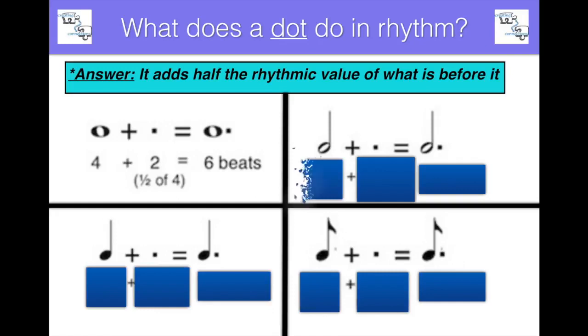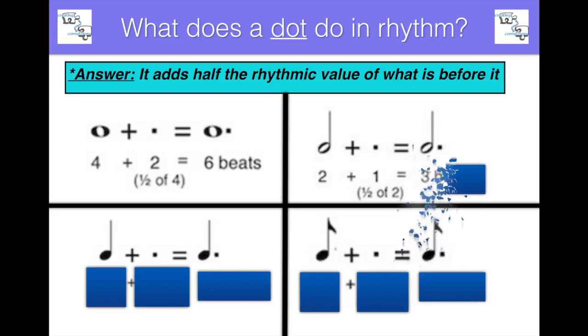So a half note we know is two beats. The dot is half of two, and the dotted half note equals three beats.